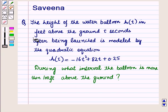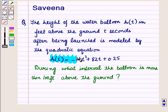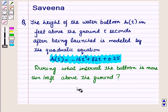Hello and welcome to the session. In this session we will discuss a question which says that the height of the water balloon h of t in feet above the ground, 3 seconds after being launched, is modeled by the quadratic equation h of t is equal to minus 16t squared plus 82t plus 0.25. We have to find during what interval the balloon is more than 100 feet above the ground.